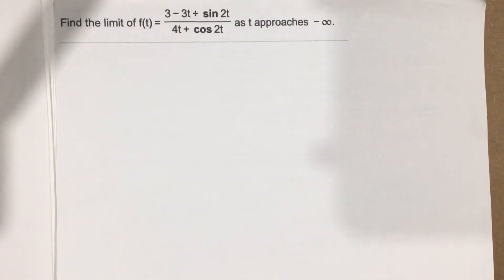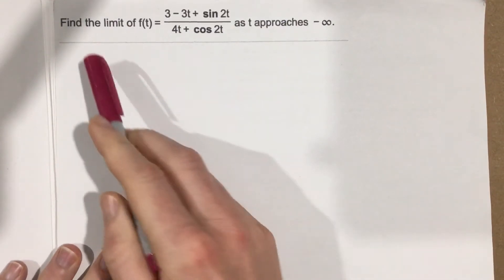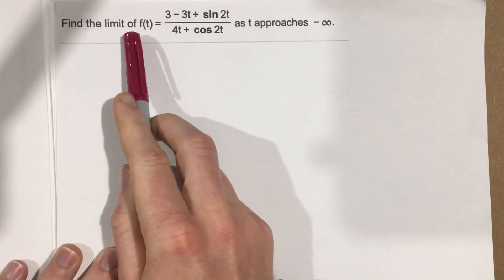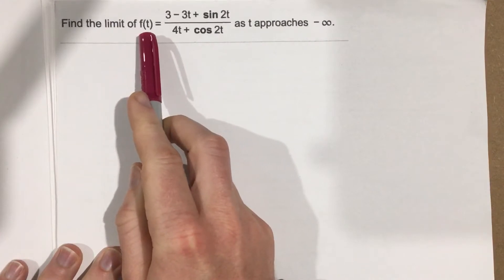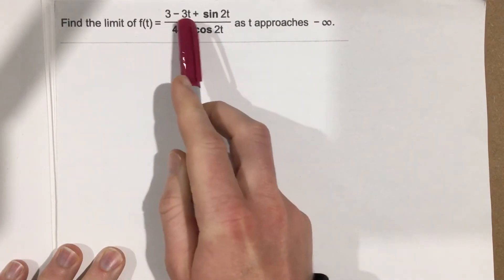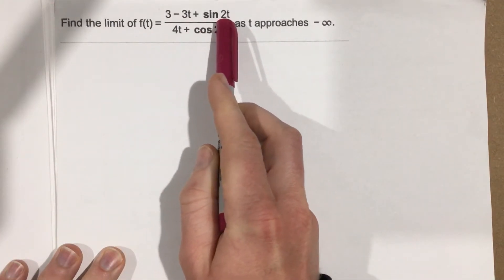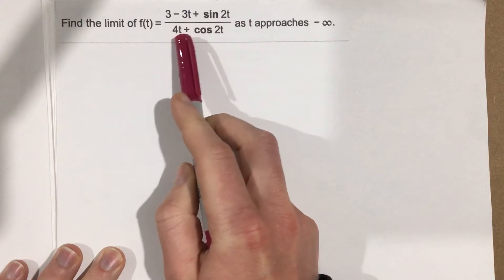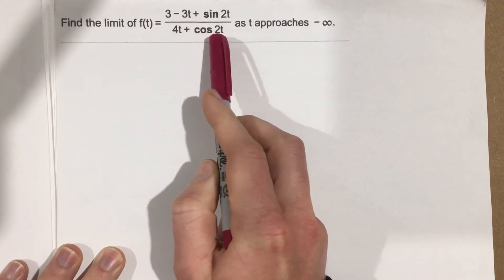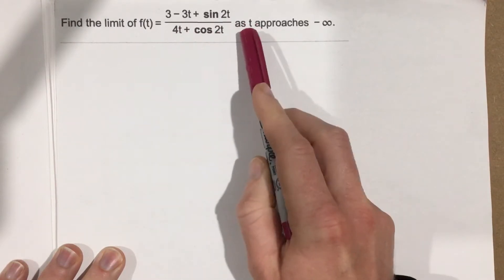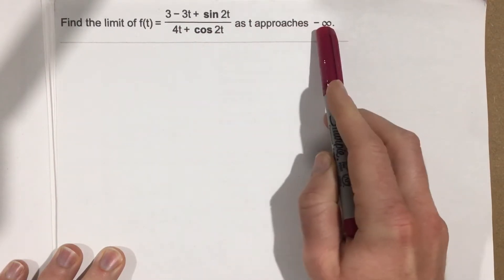This is problem number one from section 2.6. In this problem they say find the limit of f of t equal to 3 minus 3t plus sine of 2t, all over 4t plus cosine of 2t, as t approaches negative infinity.